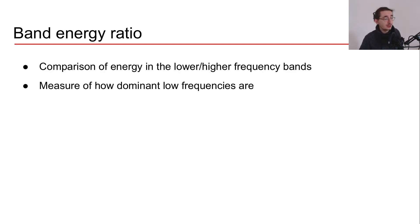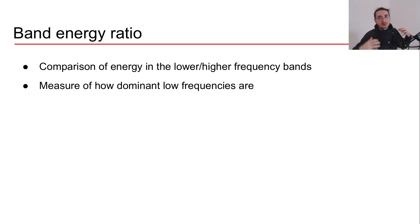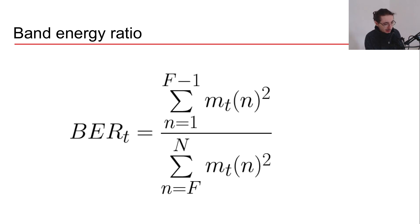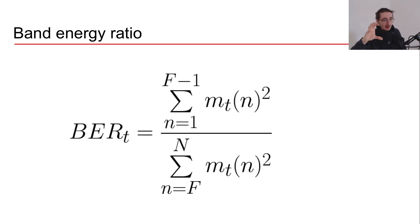Let's jump to the first audio feature: band energy ratio. This feature provides information about the relation between the energy in the lower and higher frequency bands — we can think of it as a measure of how dominant the lower frequencies are. The formula is a fraction, as expected, because we're talking about a ratio of two elements.